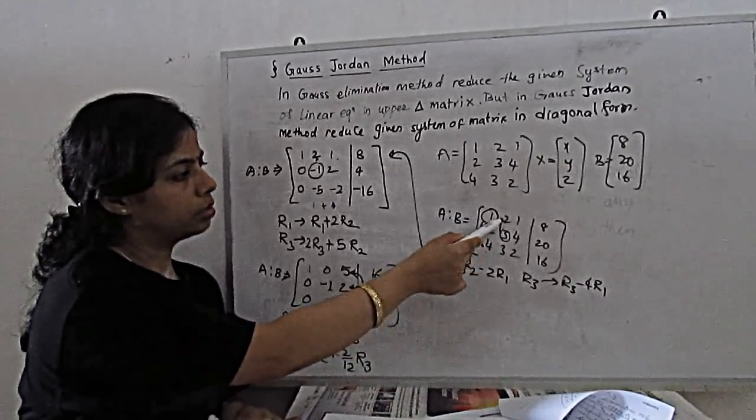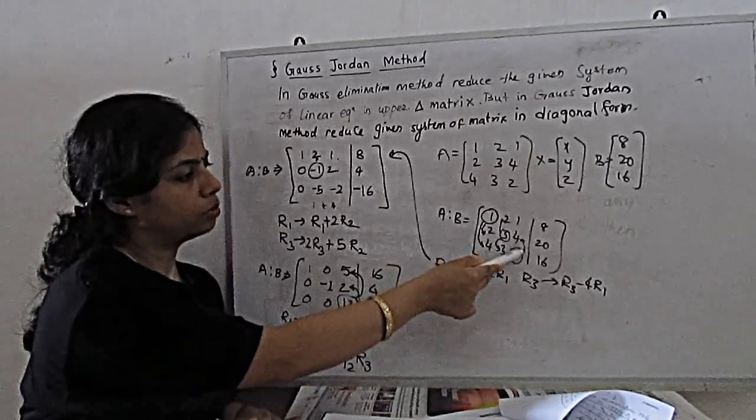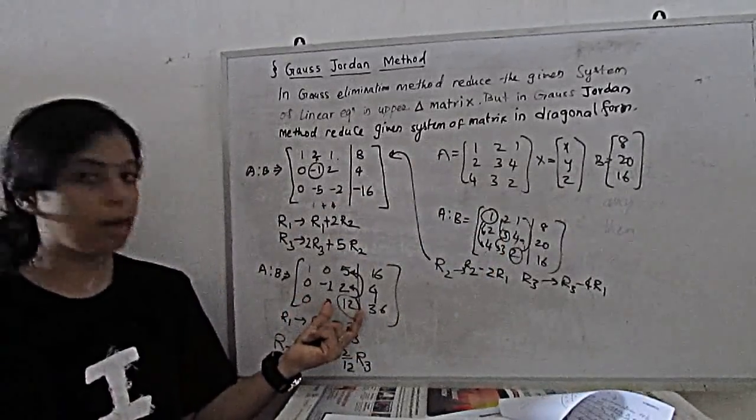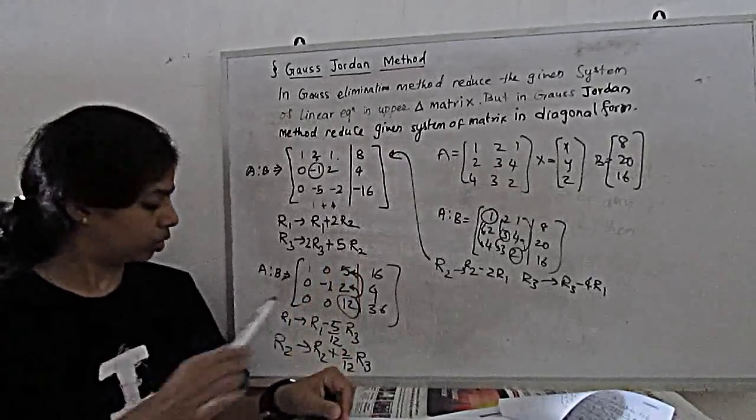with this element, this becomes 0, this becomes 0. Third step, with the help of this, this becomes 0 and this becomes 0. So here, with the help of this 12, we have to make both above elements become 0.